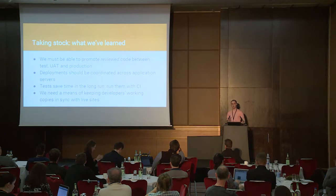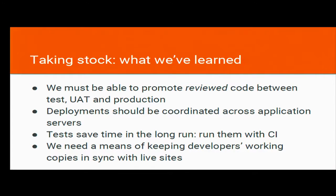In hindsight, this stuff is all really obvious. We basically learned that we must be able to promote only the code that's actually been reviewed — once we've had code UAT'd internally, that's what we want to be releasing, and only after it's passed testing. We want to know ahead of time what we're actually deploying. Deployments need to be coordinated across application servers — we shouldn't be relying on developers manually logging into servers. We should have tools that take a release and apply it, taking each server out of rotation one by one. We want to get into CI, but because we had the problem of not being able to do reproducible builds, we can't guarantee that what we're testing is what's going live. And we need a means of making it easier for developers to get a local copy of a production site.